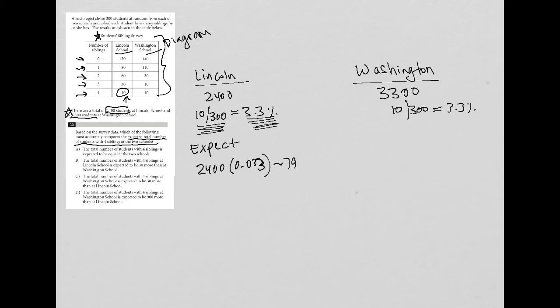And I'm getting that that's roughly 79. I have 79.2, let's call it 79. And then the same thing for Washington, my 3,300 times 0.033 for 3.3% is equal to, let's say, 109. I'm getting 108.9, but I'll round it to 109 students. So that's the expectation based upon the trustworthiness of the survey.